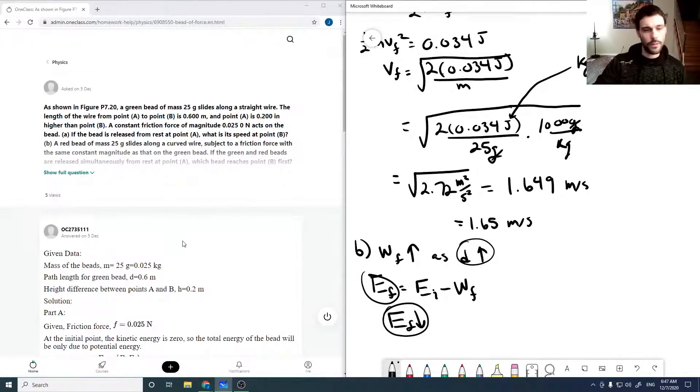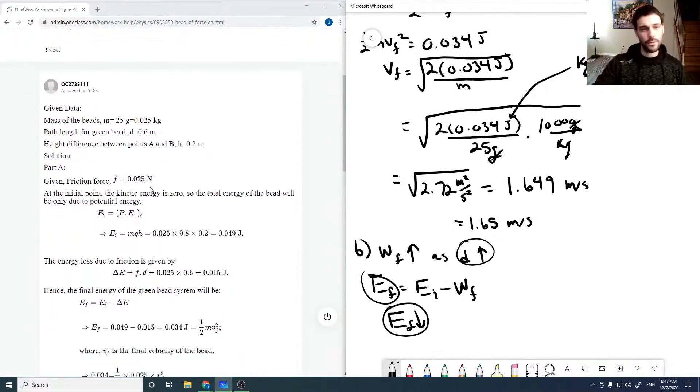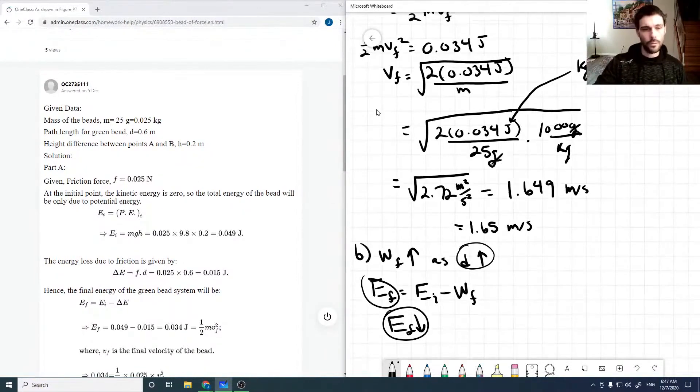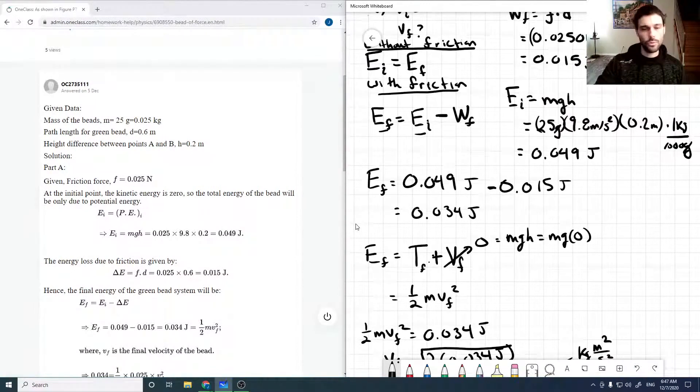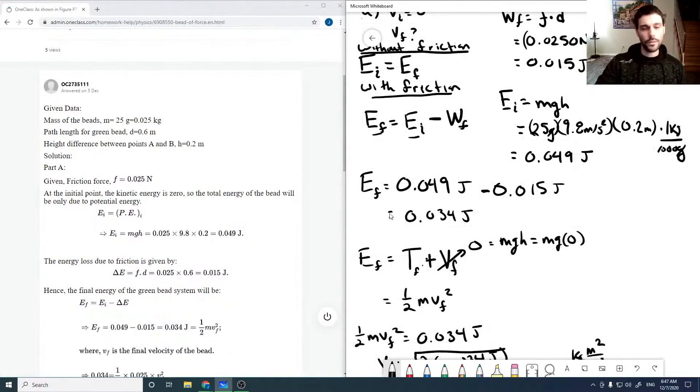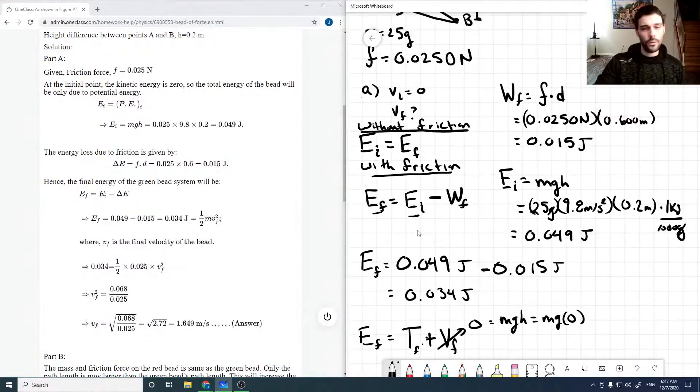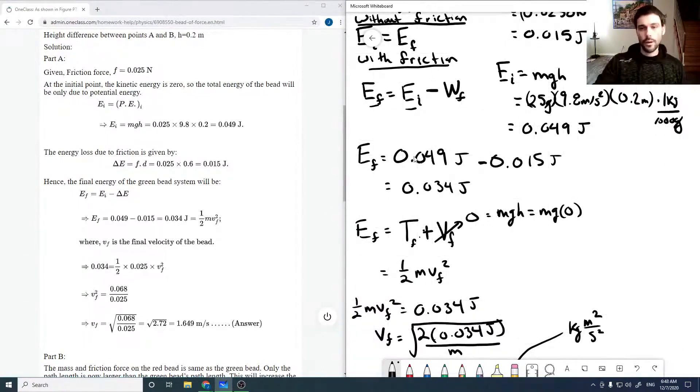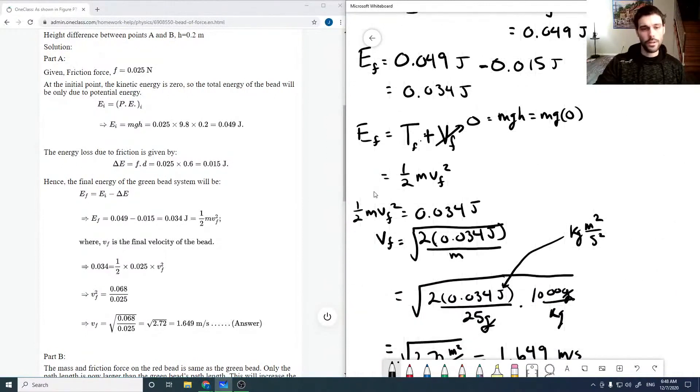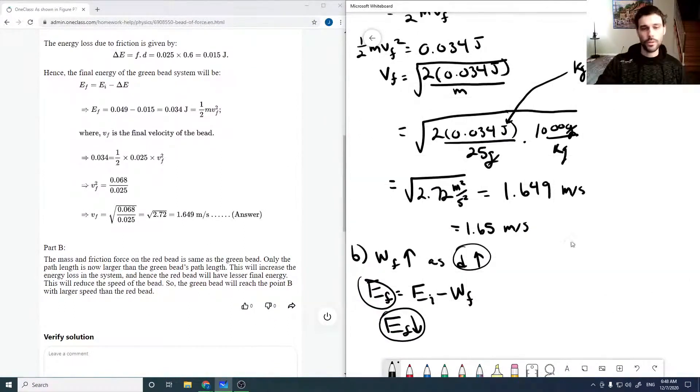Yeah, so checking through the solution we have here. So we're given the mass, the path, and the height difference is our frictional force. So we can get our initial energy as MGH, which comes out to be 0.049 joules. Energy loss due to friction is 0.015, which is just our force times our distance. That means our energy, our final energy is just that minus, our initial energy minus our work due to friction, which comes out to be 0.034. That equals our final energy, which is just kinetic. So we can solve for VF, and if we do, we get 1.65 meters per second.